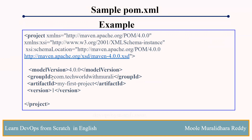The next one is groupId. groupId is nothing but the company's reverse domain name. For example, if the company name is techvorelwithmurli.com, we will write it as com.techvorelwithmurli — the reverse name of the particular domain. Then, artifactId is nothing but the project name. For example, if you see here, the project name is my-first-project.